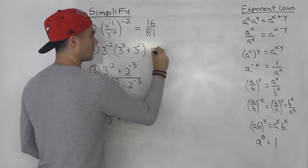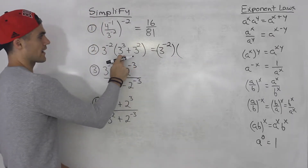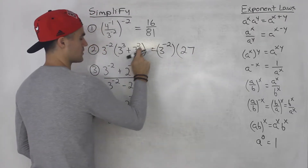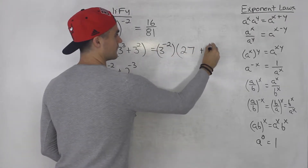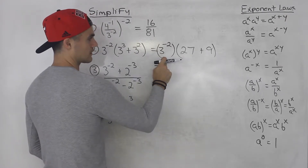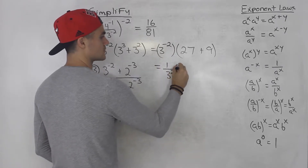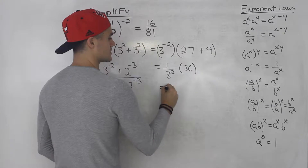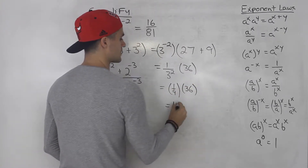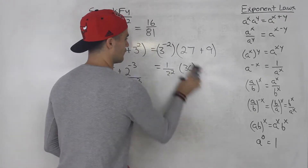I'm going to keep the three to the negative two separate for now and just work with this bracket. Three to the power of three is 27, and three to the power of two is nine. So 27 plus nine is 36. Then three to the power of negative two changes to one over three to the power of two, and then we have 36 over here. So this ends up being one over nine times 36, which ends up being four. So the answer to number two is four.